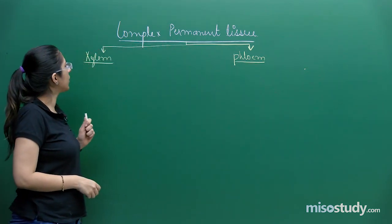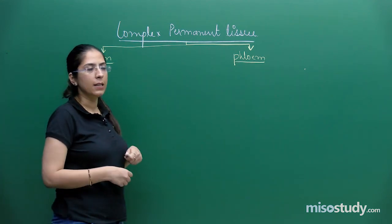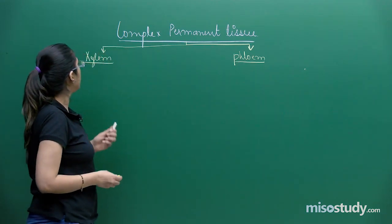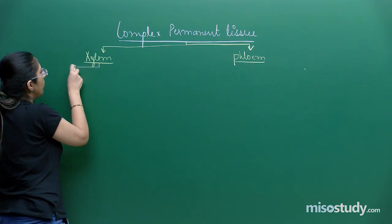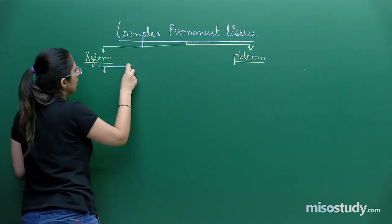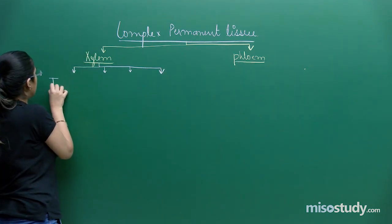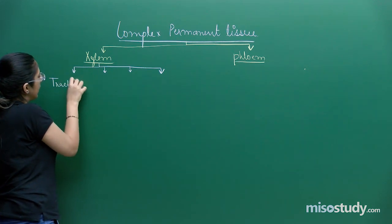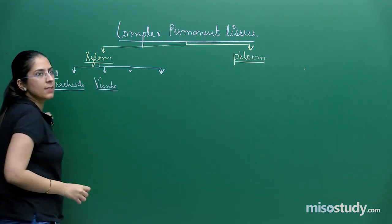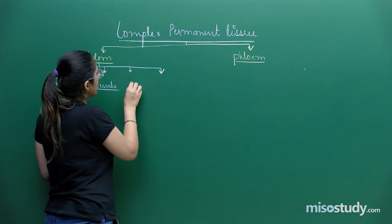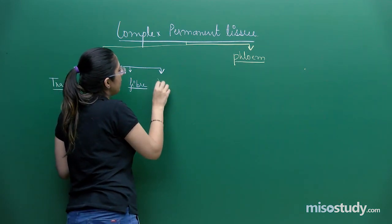Xylem is the element that helps in conduction of water and minerals. In xylem, we have discussed different cellular structures: first is called tracheids, second is called vessels, third is called xylem fiber, and the fourth one is called xylem parenchyma.